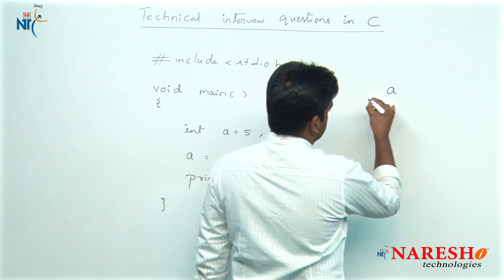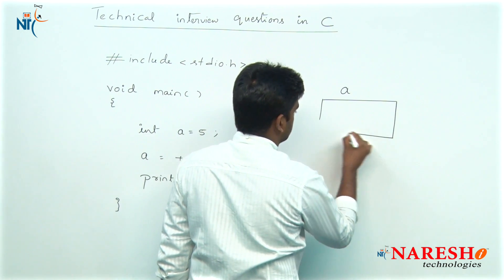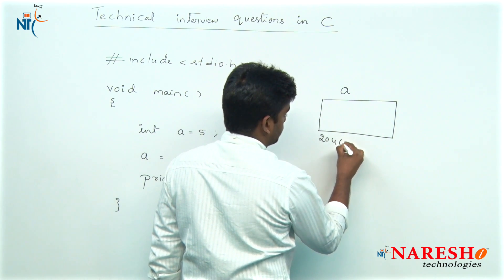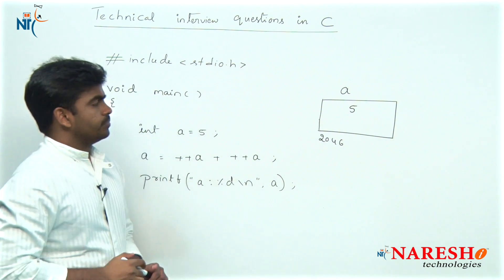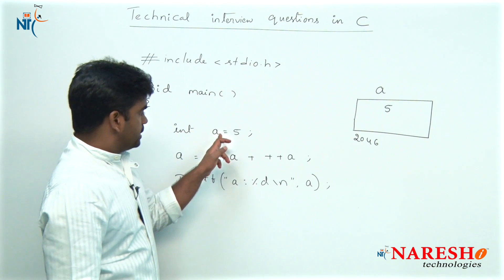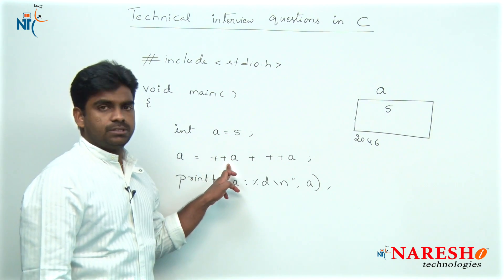a gets memory allocation at some location, at some address, and initial value is 5. Whenever the control comes to that next instruction.